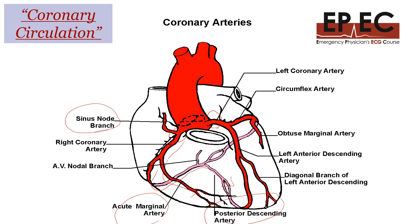If we keep following the right coronary, towards the end one of the branches is the AV nodal branch. The blood supply to the AV node comes mainly from the right coronary, so distal occlusion of the right coronary can result in all sorts of heart block due to ischemia of the AV node.